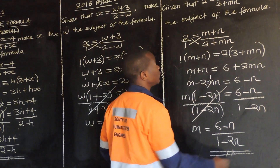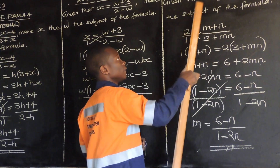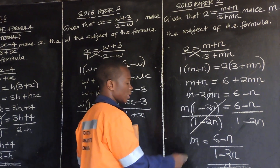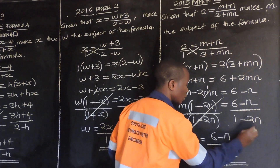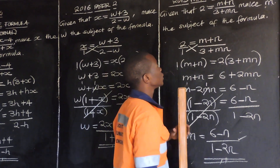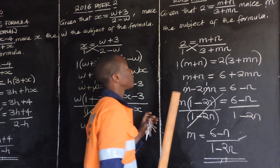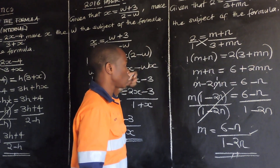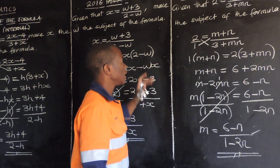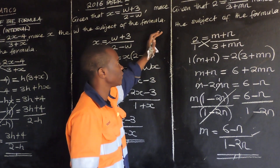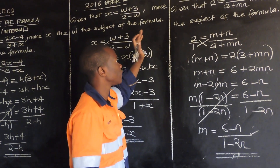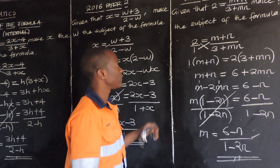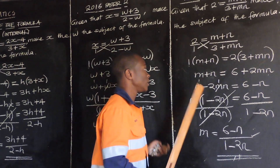And so we've subjected this expression to m — we've made m the subject of the formula. This marks the end of this presentation on subject of the formula. These things are very, very simple, and this question comes every year. This topic is a major topic in mathematics paper 2, and it carries about 3 marks every year. So ensure that you go through these things.